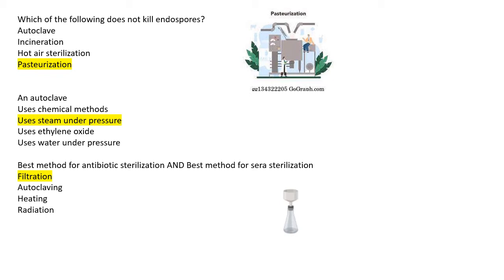Next: the best method for antibiotic sterilization and serum sterilization is what? The method used is filtration. You cannot autoclave antibiotics or serum, and you cannot use heat or radiation either. So the correct option is filtration.